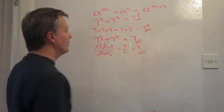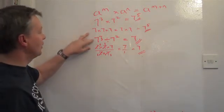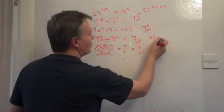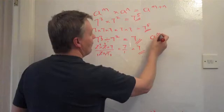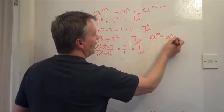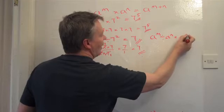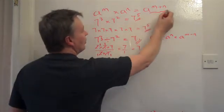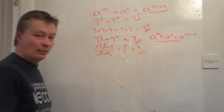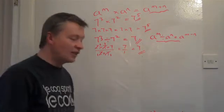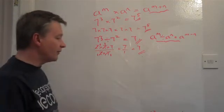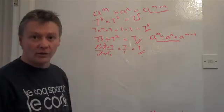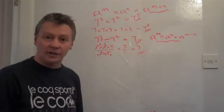So I've proven the second law: a to the power of m divided by a to the power of n equals a to the power of m minus n. These two laws are right around GCSE grade C questions, so I'm going to give you two examples so you can pick up a couple of marks in your exam.